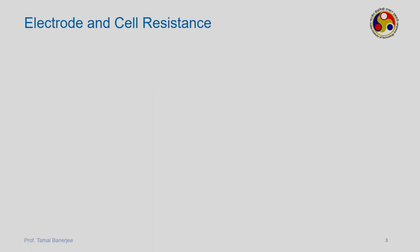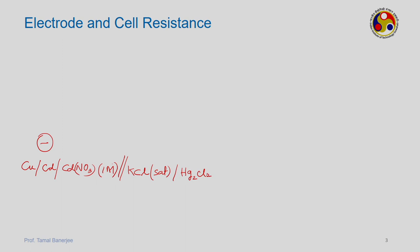For example, consider a cell where the cathode is the copper wire on top of a cadmium electrode dipped in one molar cadmium nitrate solution. This is the definition of describing a cell. In contact with the cathode-anode is saturated potassium chloride with Hg₂Cl₂ mercury chloride and mercury. This means Hg in elemental form gets oxidized to Hg₂Cl₂, going from oxidation state 0 to +2, and the reverse — Hg₂Cl₂ breaking into Hg and Cl⁻ — is also possible.